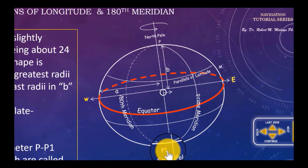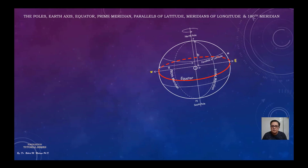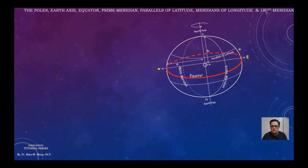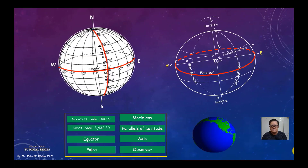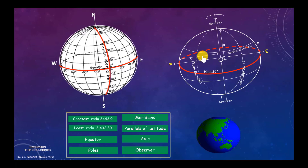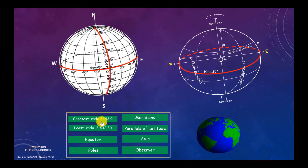The least radius (b) is 3,432.37 nautical miles. The Earth turns about its shortest diameter, and the extremities of the axis are called the poles — the North Pole and the South Pole. Now let's examine this image to learn more about these terms. Looking at the sphere, we first go to the greatest radius.